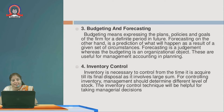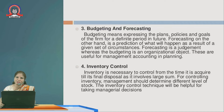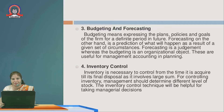Budgeting and forecasting are also done through management accounting. A budget refers to expressing the plans, policies, and goals of the firm for a definite period of time. Forecasting is the prediction of what will happen in the future under a given set of circumstances. It is a judgment, whereas budgeting is an organizational objective.